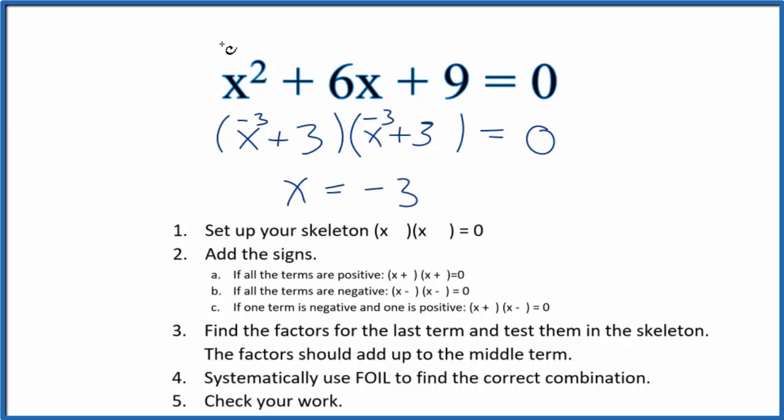And we can check that. We could have minus 3 squared plus 6 times minus 3 plus 9. If you add all of these numbers up, they will equal 0. So we've successfully factored this equation.